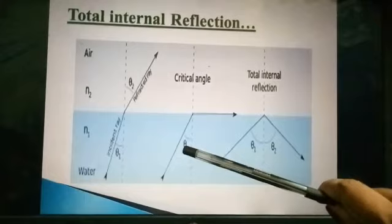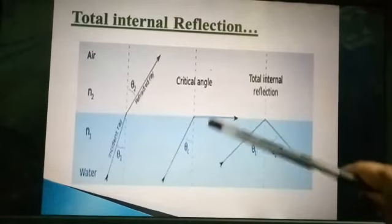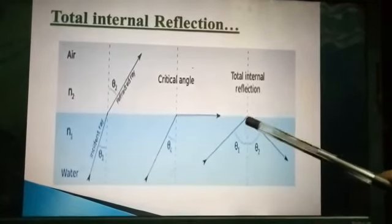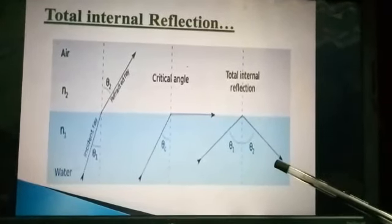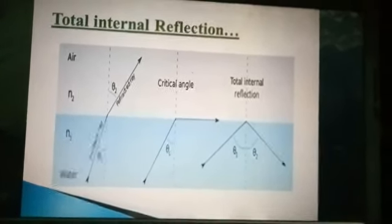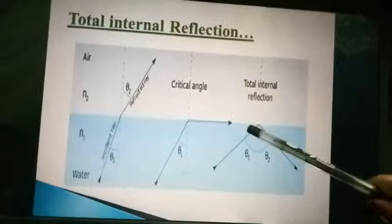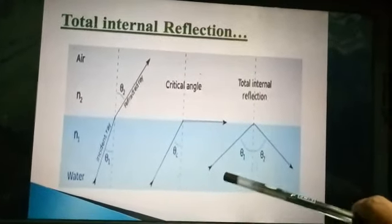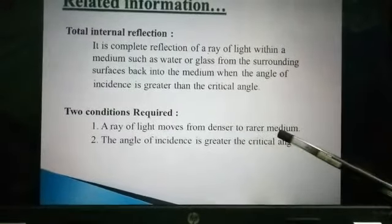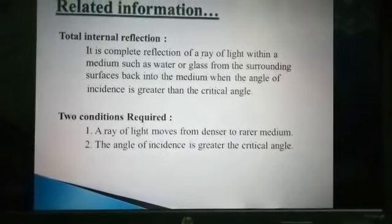Total internal reflection occurs when the incident ray moves from a denser to a rarer medium. Two conditions are required: one, the ray must move from denser to rarer medium; and two, the angle of incidence must be greater than the critical angle.